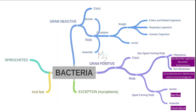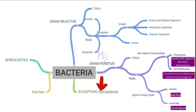Before talking about Gardnerella in detail, we should know how bacteria are classified. Bacteria are further classified into spirochetes, and also into acid-fast bacteria on the basis of acid-fast stain. We are going to talk about that in our upcoming videos, like Nocardia asteroides, which is a weakly acid-fast bacterium. There's also an exception — the Mycoplasma bacterium. On the basis of gram staining, bacteria are classified into gram-negative and gram-positive. If you want to know more about bacterial classification, I do have a video on that.